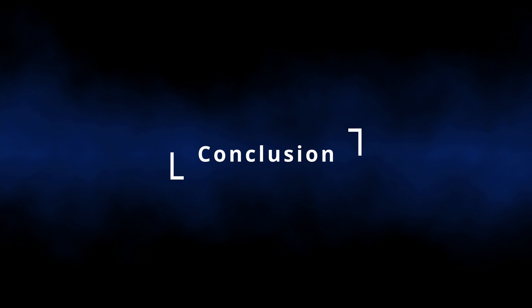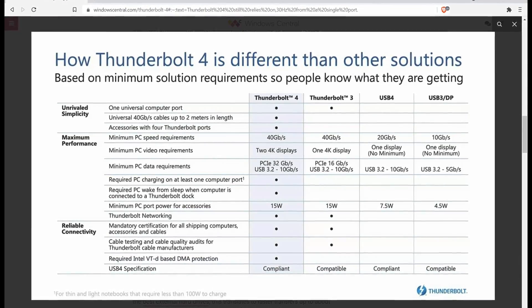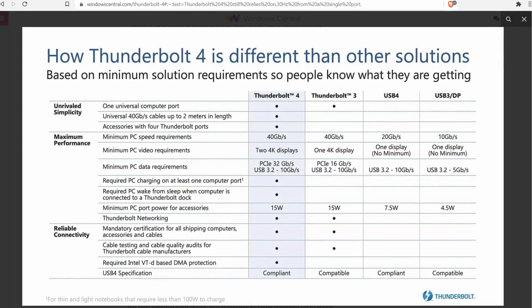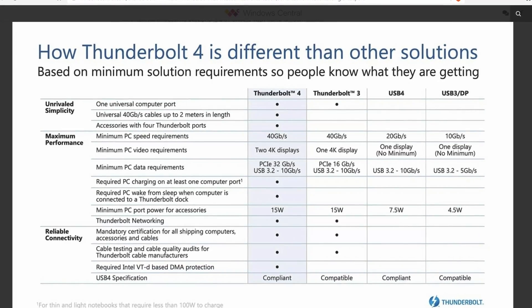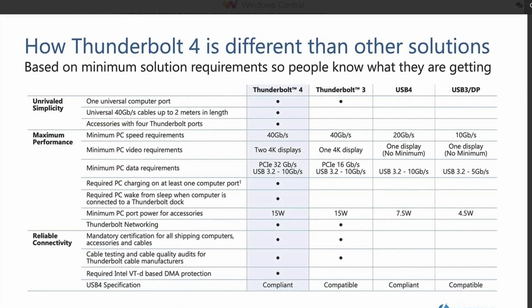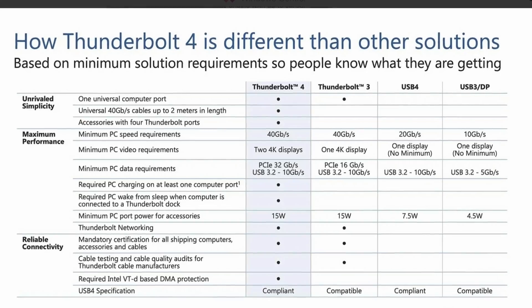In conclusion, USB Type-C is the physical shape of the connector. Thunderbolt 4 is a protocol that allows super fast data transfer interface and also includes DisplayPort protocol to power up to 4K displays, ability to charge laptops and other devices, and other features. If you like this video, please be sure to smash the like button and subscribe to the channel for more content like this. Thanks for watching and I'll see you in the next video.